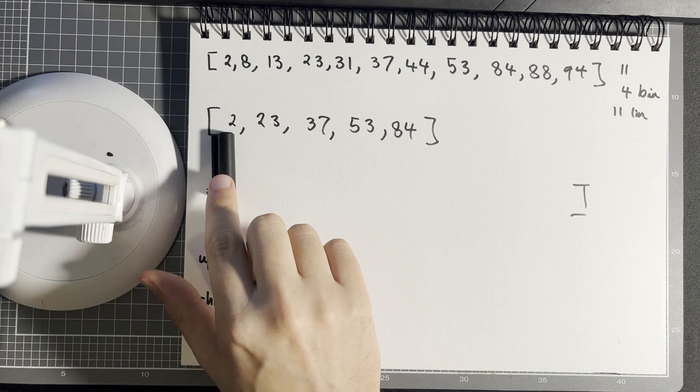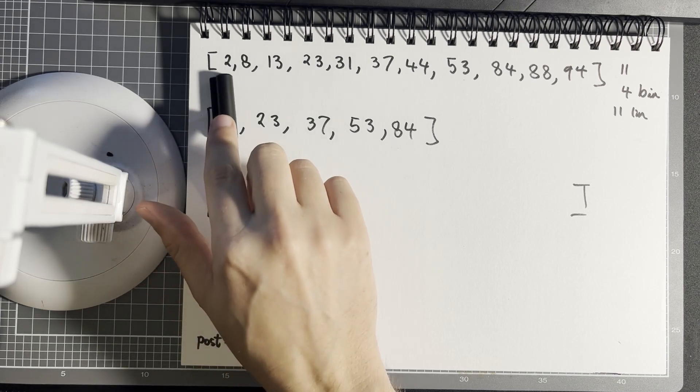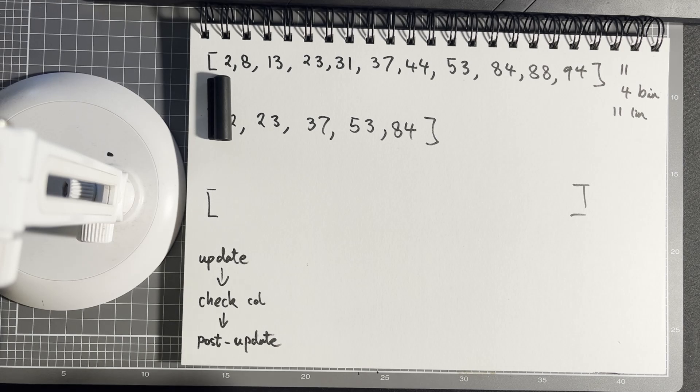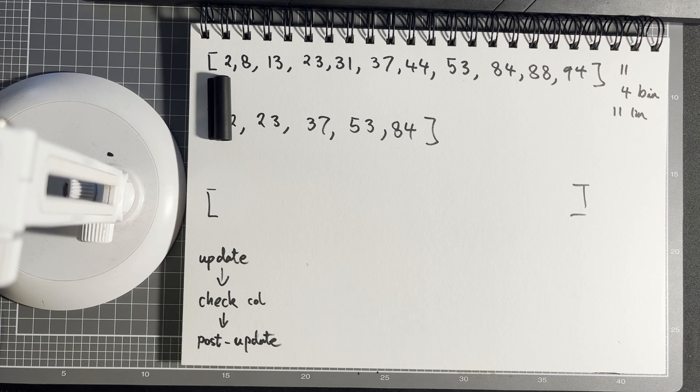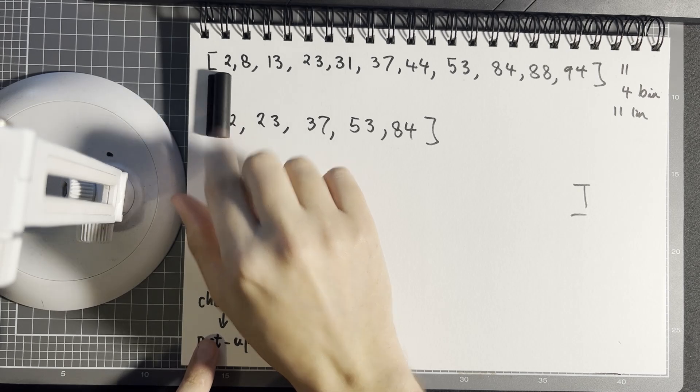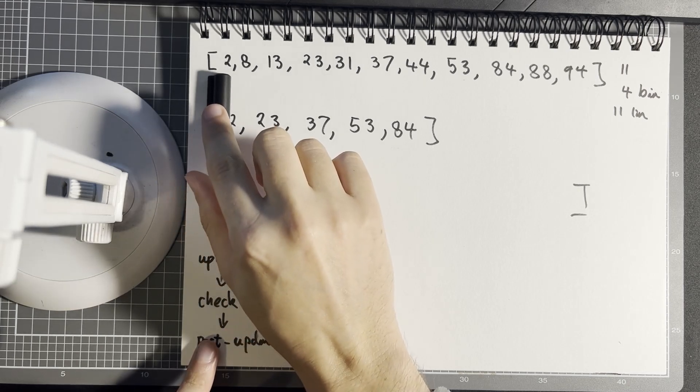In the worst case, yeah, we look through everything, but in the best case we can make a restartable search. So I've got entity two, I'm going to query my position and I'll start at the beginning, and then that's the first element and I get it.